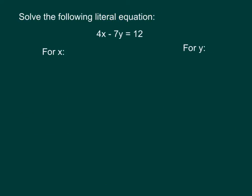Here I have a literal equation, 4x - 7y = 12. I want to solve it twice, first for x and then for y. Pretty much the same process either way. I'm solving for x, meaning I want to get x by itself. Working backwards through the order of operations, I'm going to take care of that 7y first by adding 7y to each side.